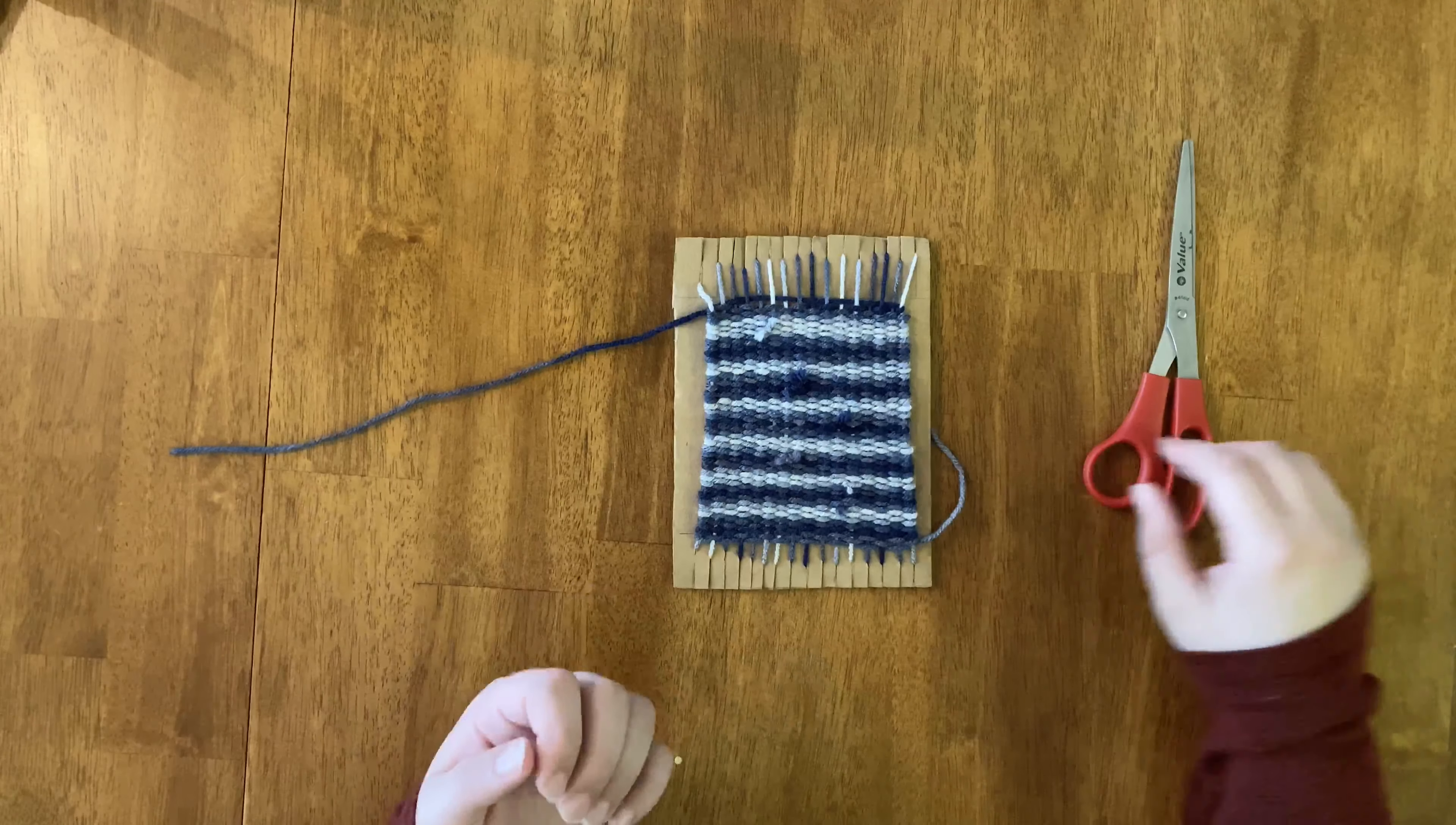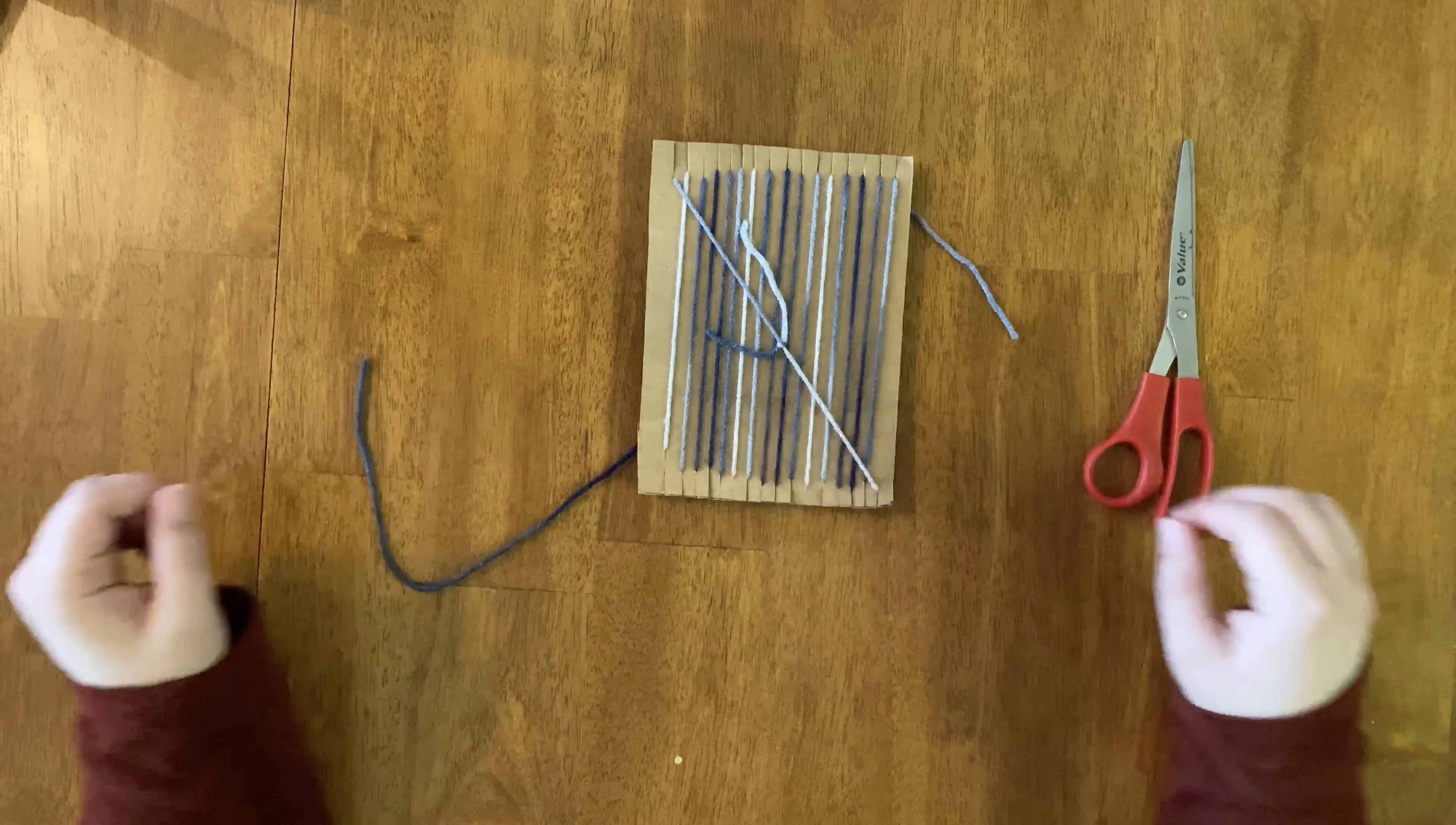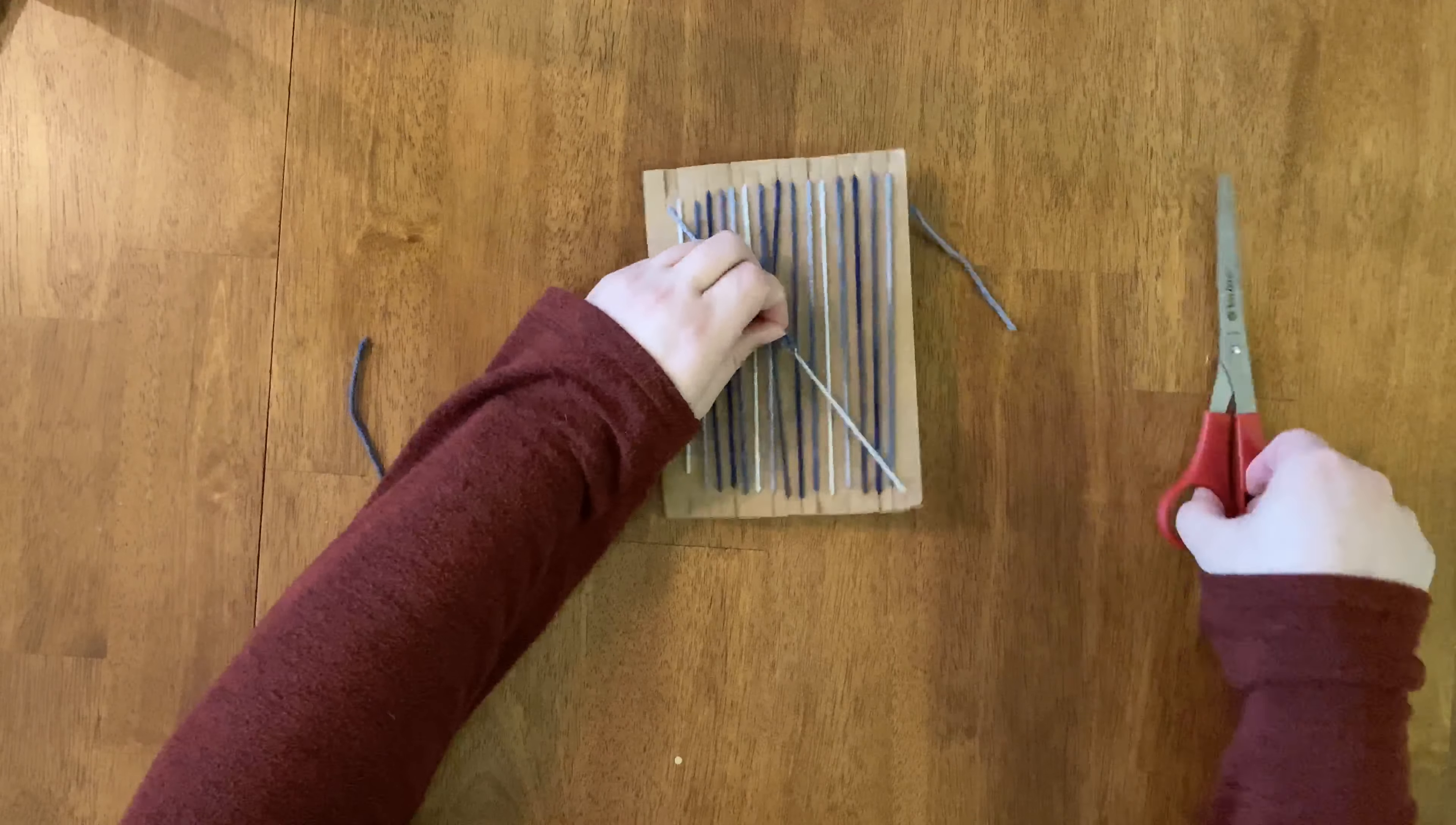Note where your weft strings are. You'll have one at the top and one at the bottom. Then you'll flip your loom over and either remove the lines you taped down or cut the line that you tied in the back.